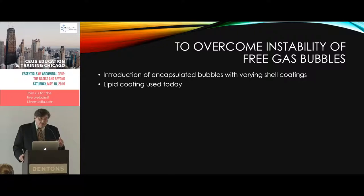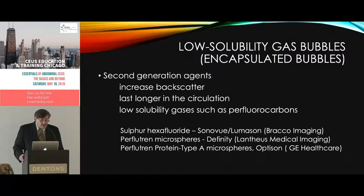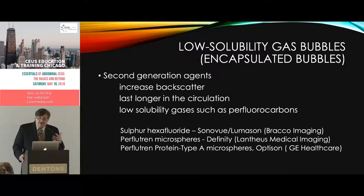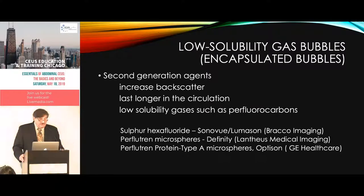We now have gases — not air — that are relatively stable in blood, along with a protein shell that allows them to last longer. These are called second-generation agents. The first generation, like LevoVist, didn't last very long and wasn't very helpful due to its limited duration. Second-generation agents have increased backscatter, last at least five minutes in circulation — up to ten minutes with newer equipment — and use low-soluble gases such as perfluorocarbons.